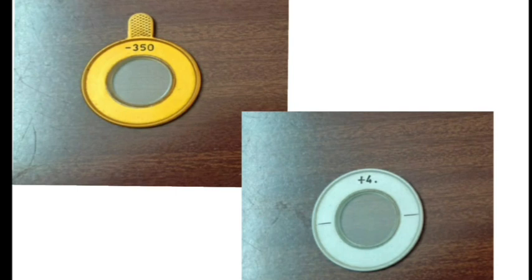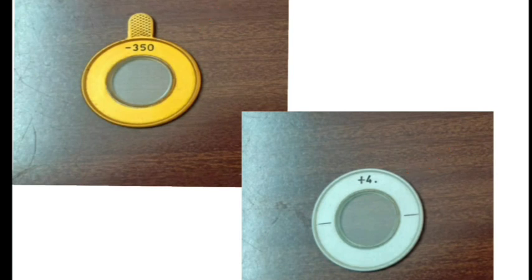Then you rotate the lens. If there is distortion of the image, it means that it is a cylindrical lens. If there is no distortion of the image, it is a spherical lens. As you can see, the spherical lens comes with a handle, whereas the cylindrical lens does not have any such handle.